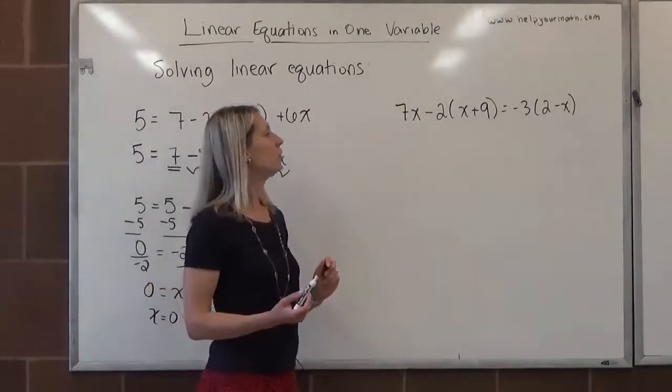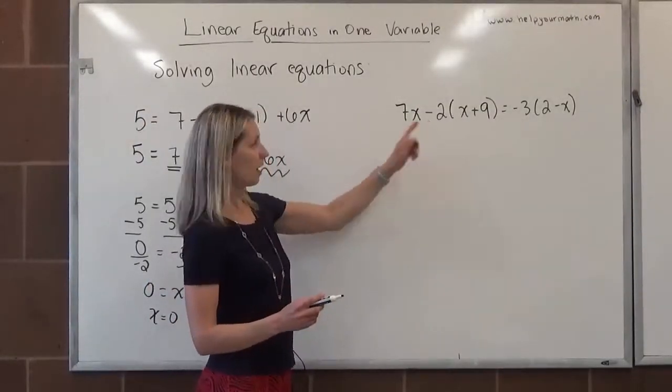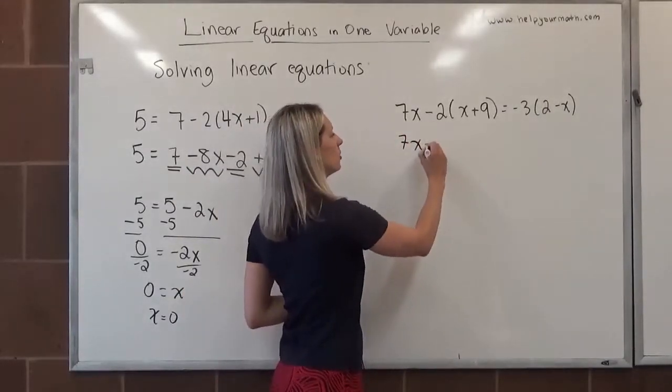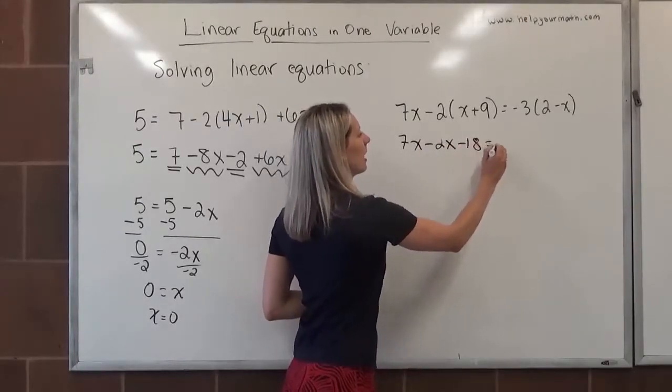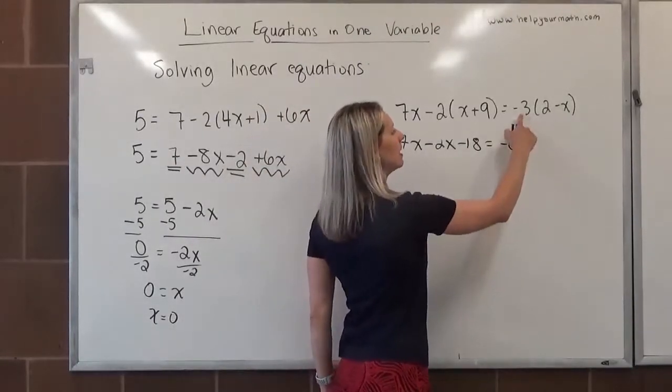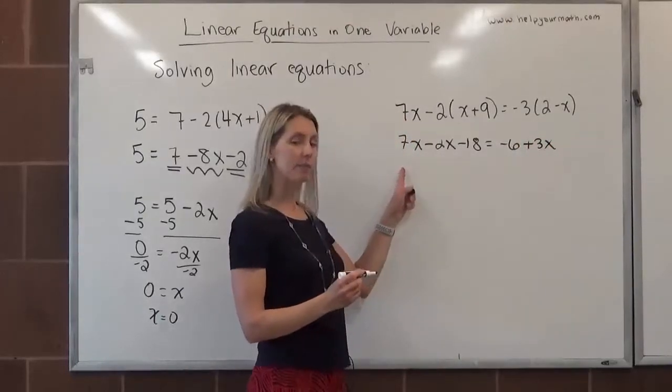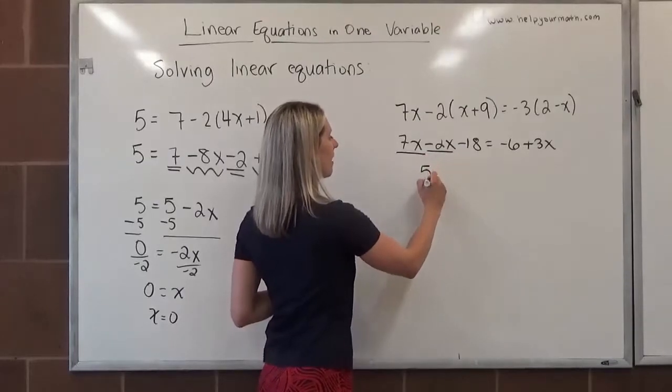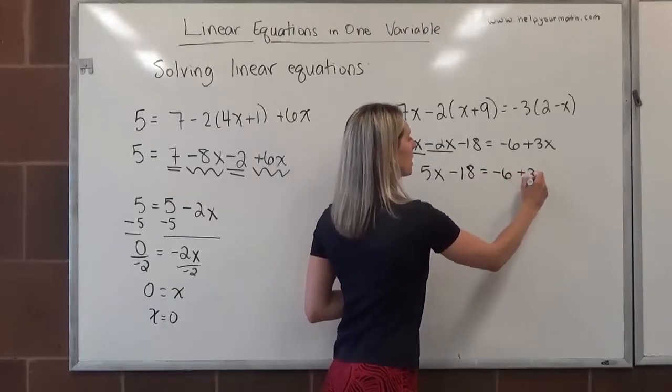In the second equation, we do have to clean up both the left hand side and the right hand side. First, on either side, we are going to distribute. This would be 7x, we're going to distribute a negative 2, minus 2x minus 18. And on the right hand side, we're going to distribute the negative 3. Negative 3 times 2 is negative 6, negative 3 times negative x is positive 3x. On the left hand side, we do have like terms. We have 7x minus 2x. That would be 5x minus 18 equals negative 6 plus 3x.